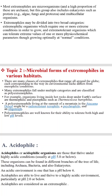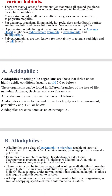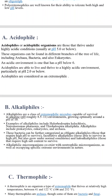Poly-extremophiles are also known for their ability to tolerate both high and low pH levels. Among the classes of microbial extremophiles are acidophiles. Acidophiles or acidophilic organisms are those that thrive under highly acidic conditions, usually at pH 5 or below. These organisms can be found in different branches of the tree of life including archaea, bacteria, and eukaryotes. An acidic environment is one that has a pH below 6, and acidophiles are able to thrive particularly at pH 2 or below.